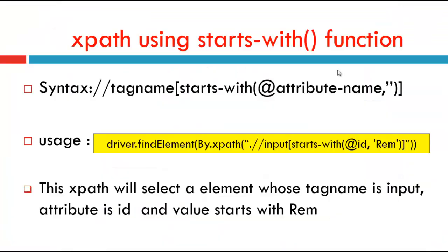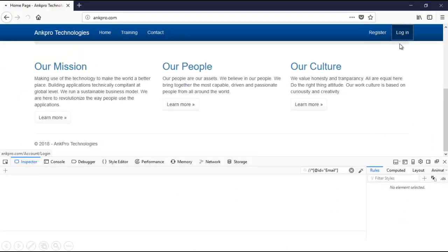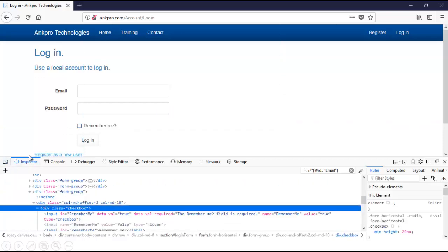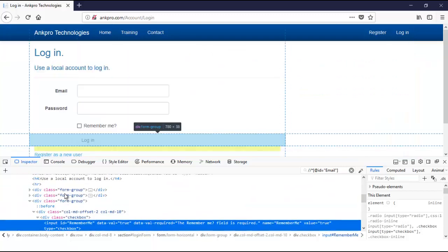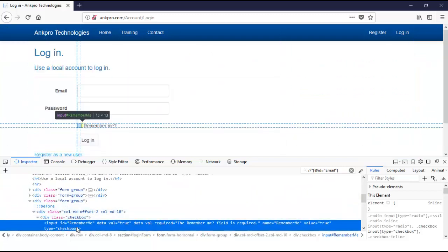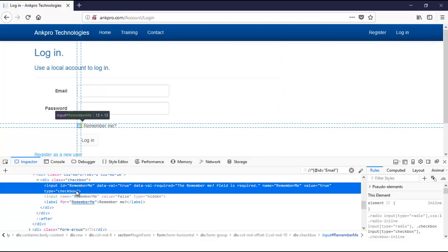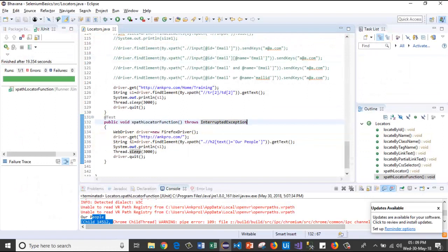XPath using starts-with function. The syntax is: tag-name[starts-with(@attribute-name, 'value')]. We use it like: driver.findElement(By.xpath("//input[starts-with(@id, 'rem')]")). This XPath will select an element whose tag name is input, attribute is id, and value starts with 'rem'. For example, the 'Remember Me' checkbox has id 'remember_me' — we only need to give the first three letters.